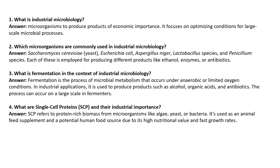What are single cell proteins and their industrial importance? Single cell protein (SCP) refers to protein-rich biomass from organisms like algae, yeast, or bacteria. It is used as an animal feed supplement or a potential human food source due to its high nutritional value and fast growth rate. That is an important part of industrial microbiology, which has many different subtopics.